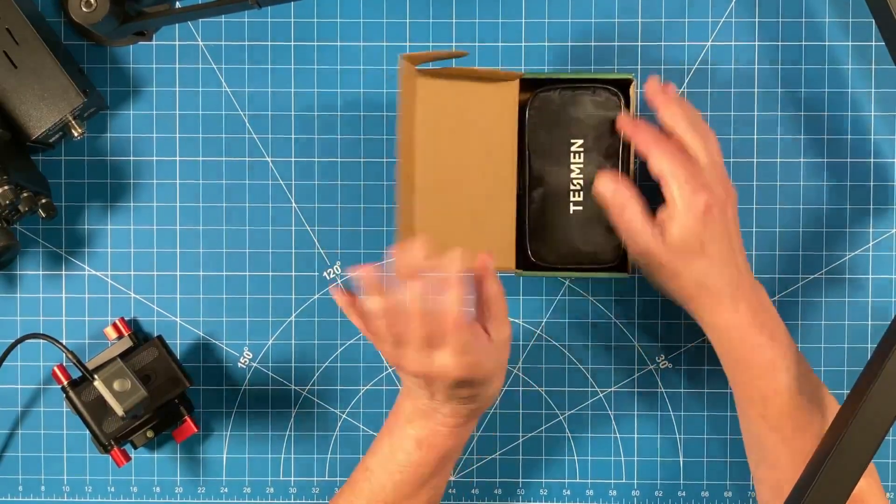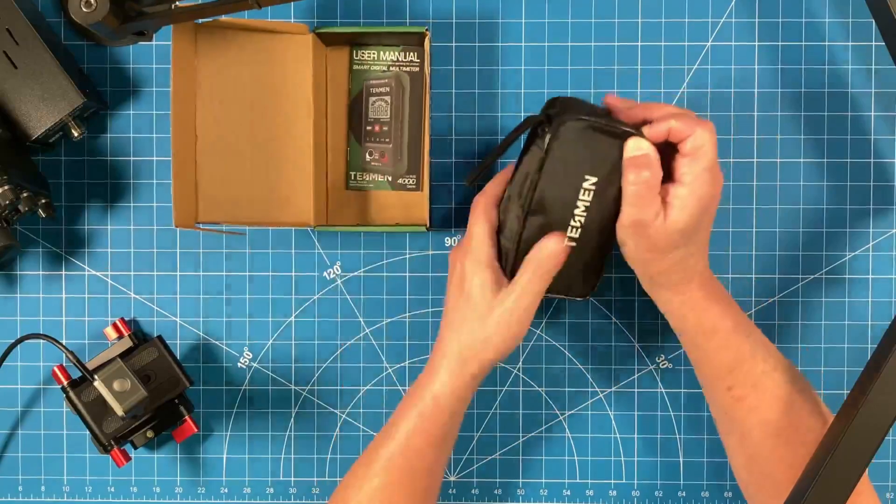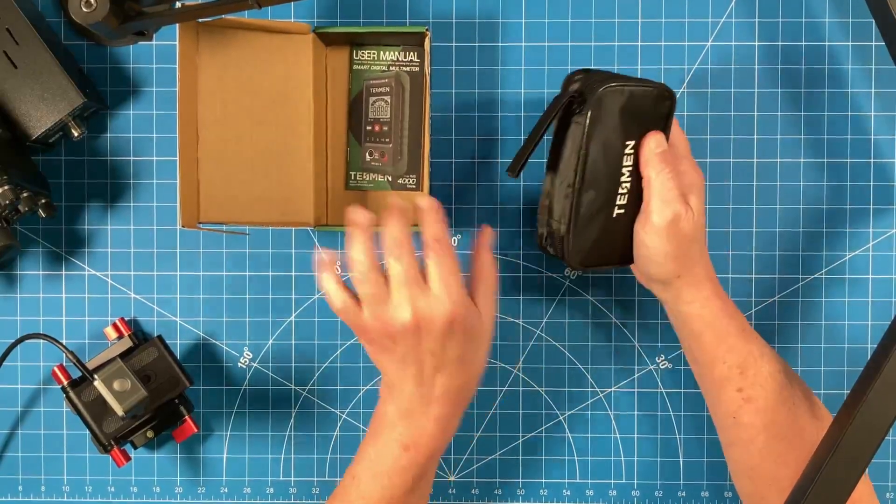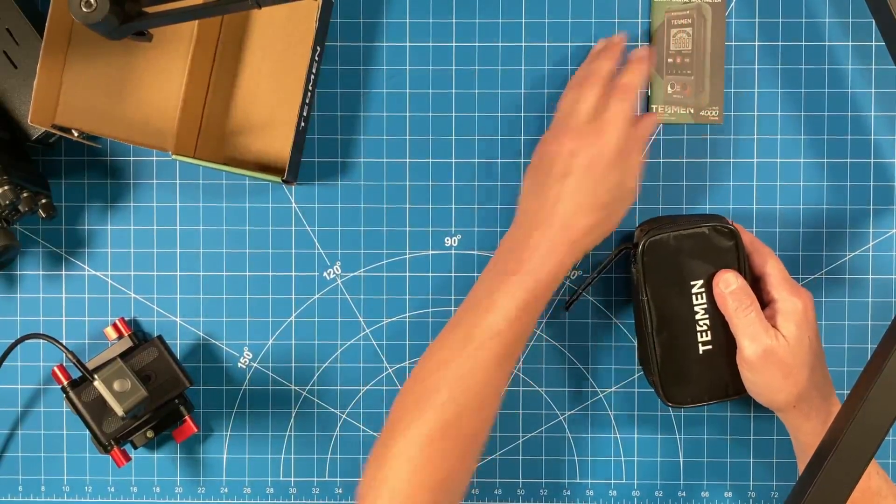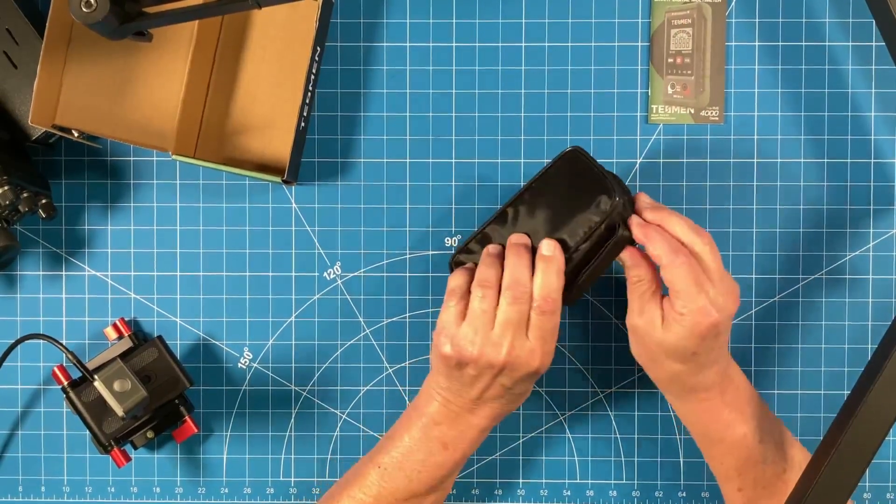So let's get a quick look at the TM510. It's a sub $10 multimeter which tells us it's already in the budget range, so if it's decent for $10, well that's a plus right there.